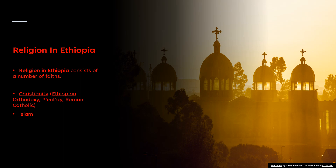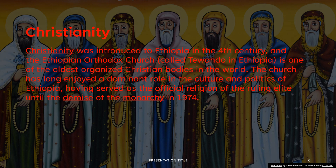Religion in Ethiopia played a big part in all the dynasties during their time. Religion in Ethiopia consists of a number of faiths, including Christianity and Islam. Let's discuss Christianity first. Christianity was introduced to Ethiopia in the fourth century, and the Ethiopian Orthodox Church, called Tewahedo in Ethiopia, is one of the oldest organized Christian bodies in the world. The church has long enjoyed a dominant role in the culture and politics of Ethiopia, having served as the official religion of the ruling elite until the demise of the monarchy in 1974, when the Solomonic dynasty came to an abrupt end.